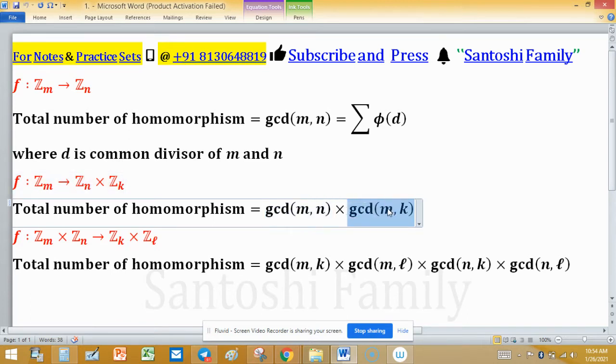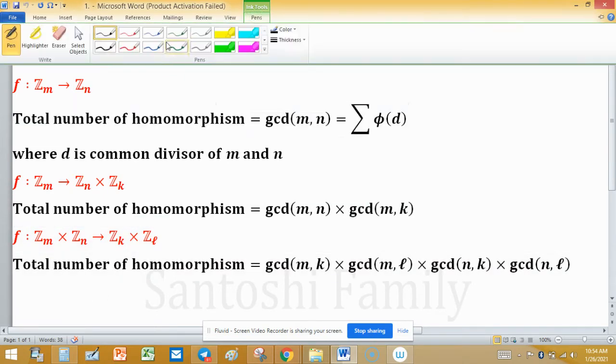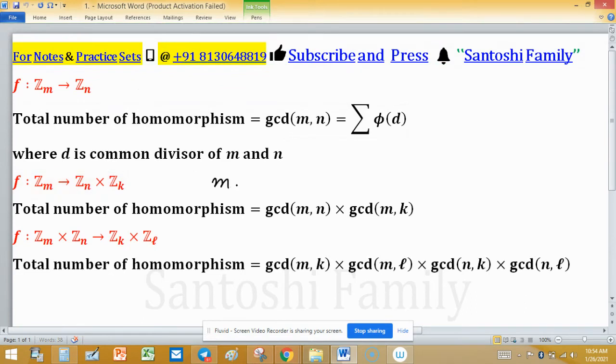...product gcd(m,k). This means n to n and m to k, which gives us m to n and m to k.